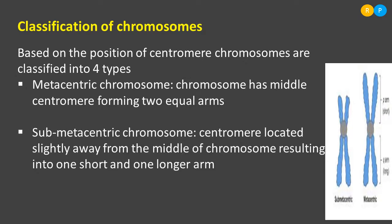The second type is the sub-metacentric chromosome, where the position of the centromere is not exactly at the center — slightly away from the middle. This results in the formation of one short arm and one long arm. Arms are not equal like in a metacentric chromosome because the centromere is not exactly at center. So unequal-sized arms can be seen on either side of the centromere in a sub-metacentric chromosome.